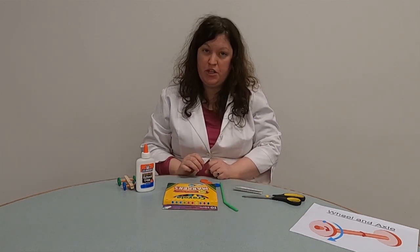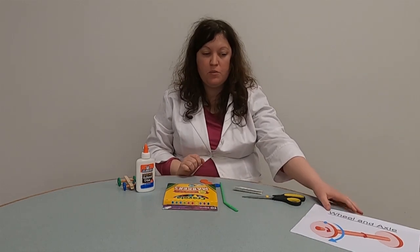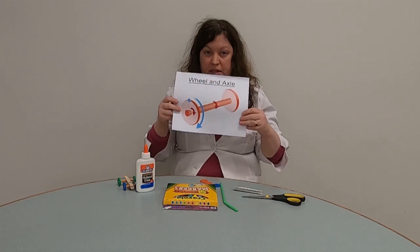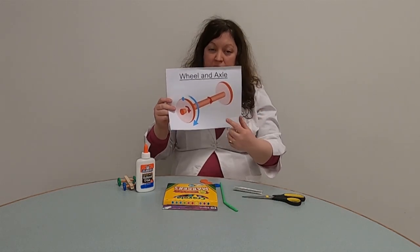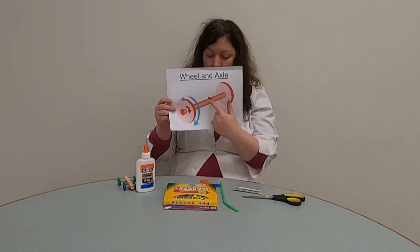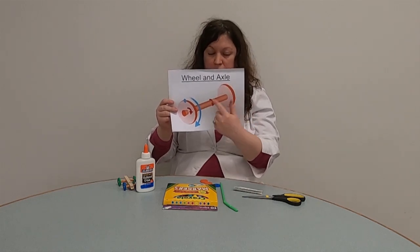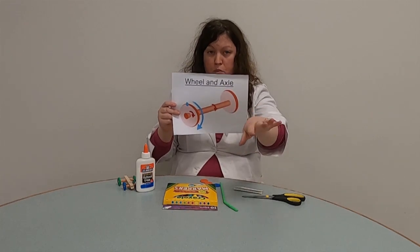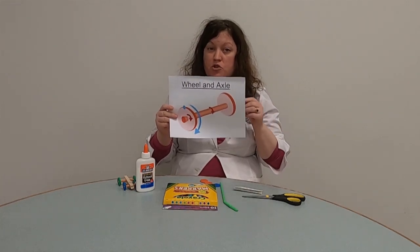Today we're going to finish our simple machines series of experiments we've been doing all year. The simple machine that we're doing an experiment on today is the wheel and axle. An axle is a rod that usually stays still and then there are discs or wheels at each end. When you turn the wheels, it moves forward or does something else to make work easier for us.